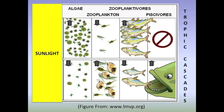As the number of cod rise, the number of herring — their prey in the subsequent trophic level — drop. As a result, the number of zooplankton balloon, and their prey, the phytoplankton, drop. The average herring size swells after the number of cod increases, as a result of less fish competing for more resources.